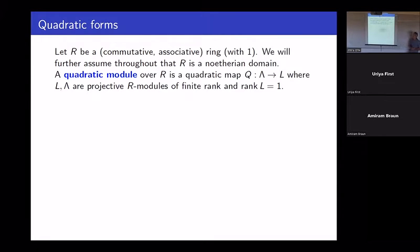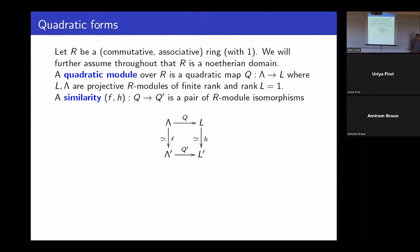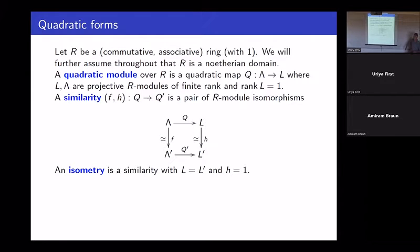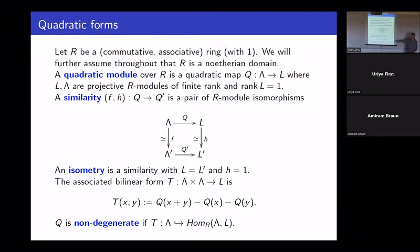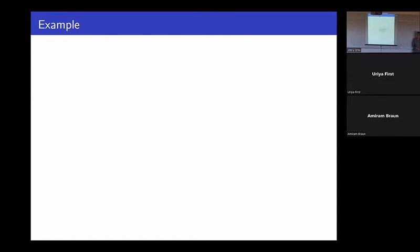A quadratic module will be a quadratic map into some projective rank-one line bundle. A similarity between such quadratic modules will be a pair of isomorphisms that commute with the quadratic map, and an isometry is just a similarity where the scalar map is the identity. I will also use the associated bilinear form given by the polar normalization, which makes sense in any characteristic. Q is non-degenerate if this map is an injection. I will be mainly interested in the singular case — I don't want it to be an isomorphism, where it is non-singular and everything has been known for a long time.